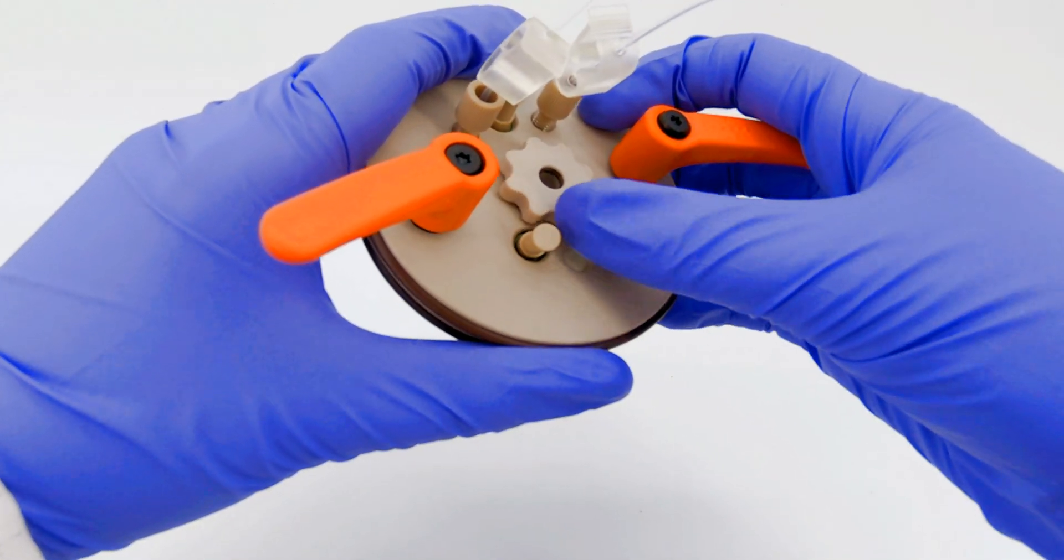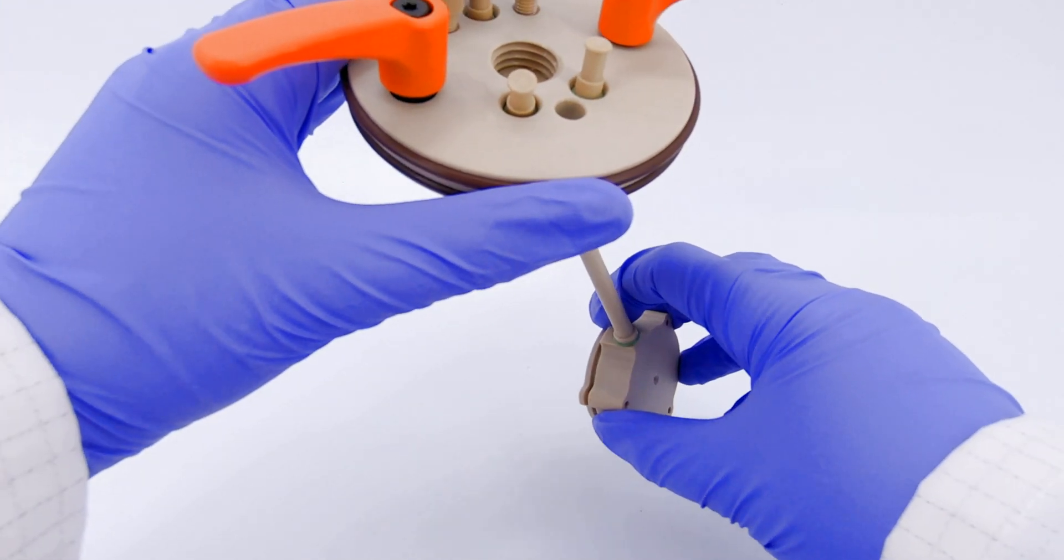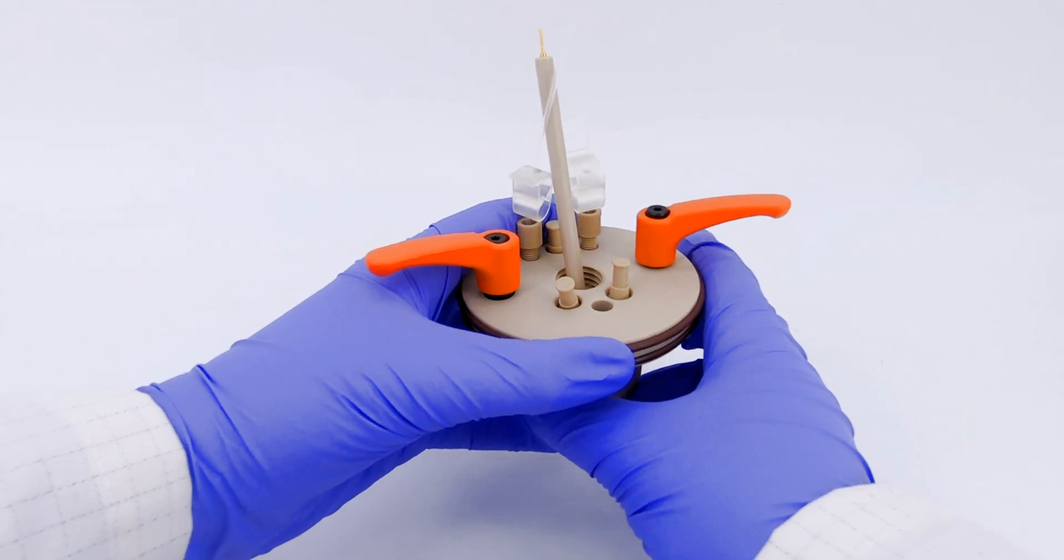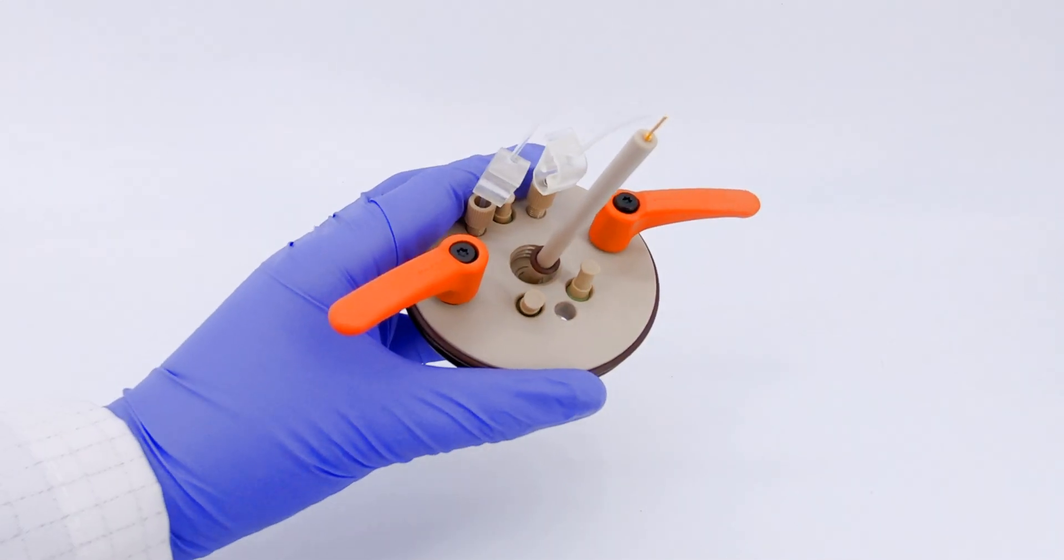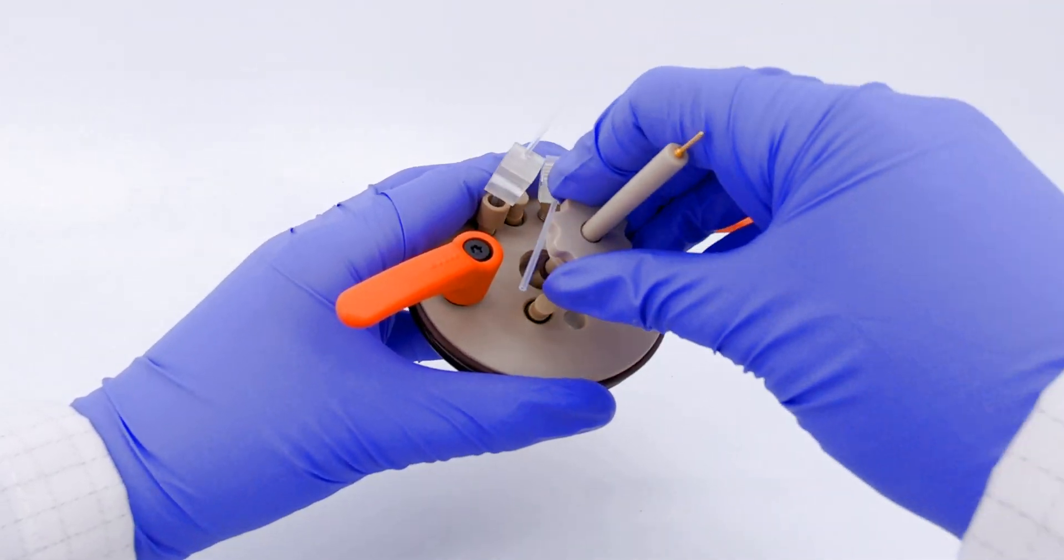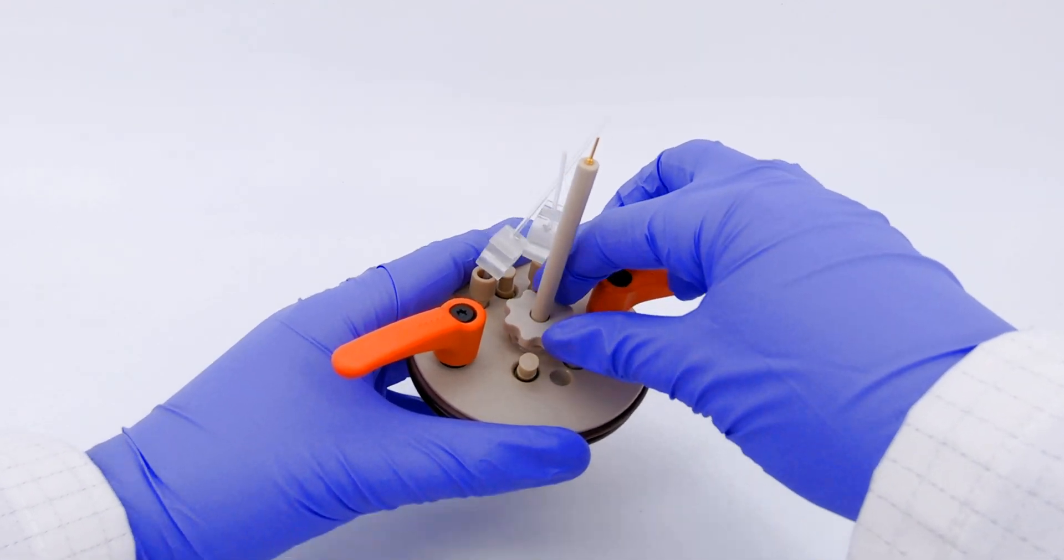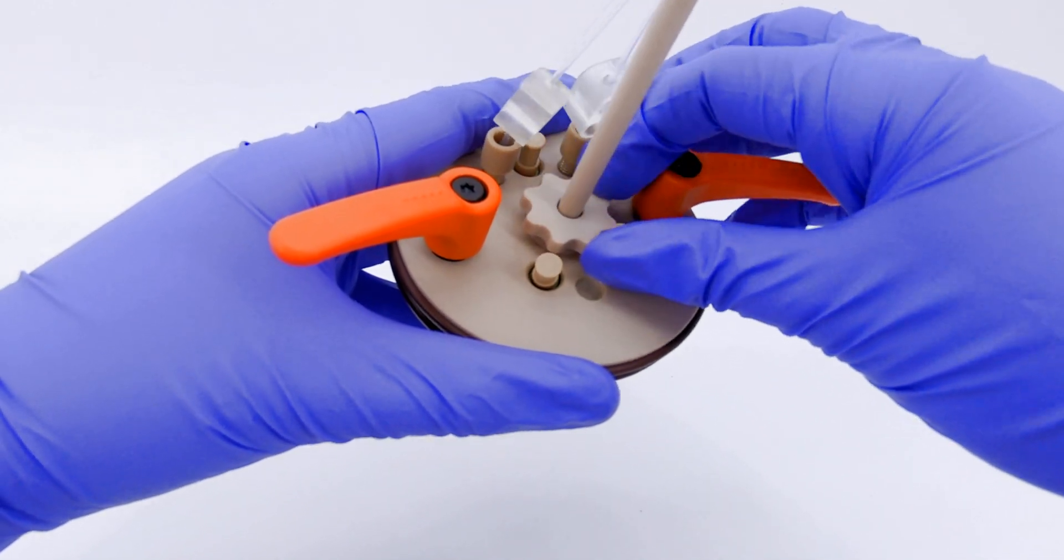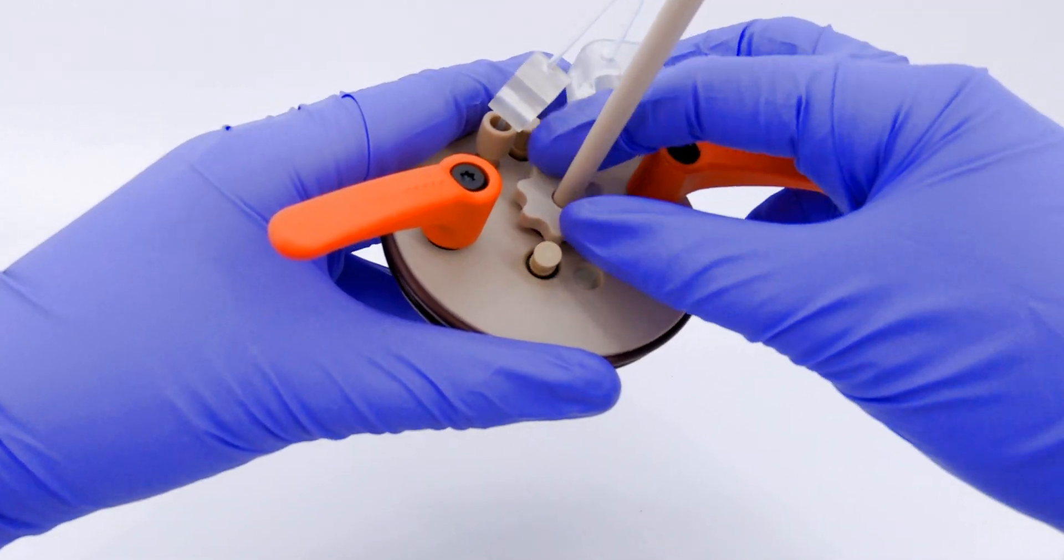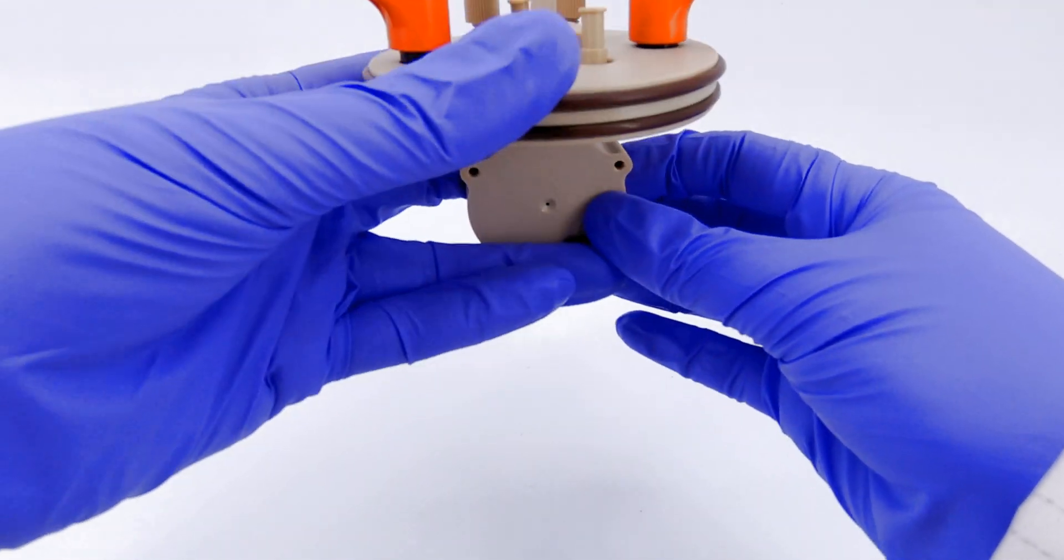Next, unscrew the working electrode holder and place your working electrode through the bottom port. Secure the working electrode using the o-ring and rescuing down the holder. Make sure the working electrode has enough room below it if you want to add a stirbar to your solution.